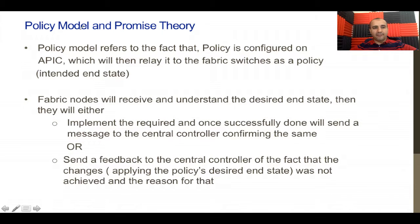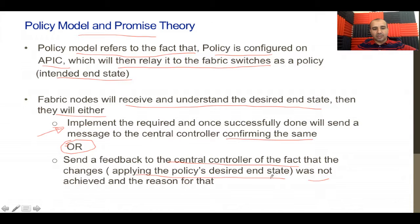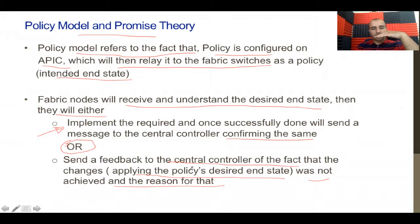In summary, the policy model means that policy is configured on the controller — the APIC — which relates the intended end state to the fabric switches. Fabric nodes receive and understand the desired end state; if there are no issues, they implement it and send confirmation to the controller. Or, they send feedback indicating that applying the desired state was not achieved and explain the reason. The policy is abstracted from the hardware, and the concrete layer always sends feedback on success or failure.